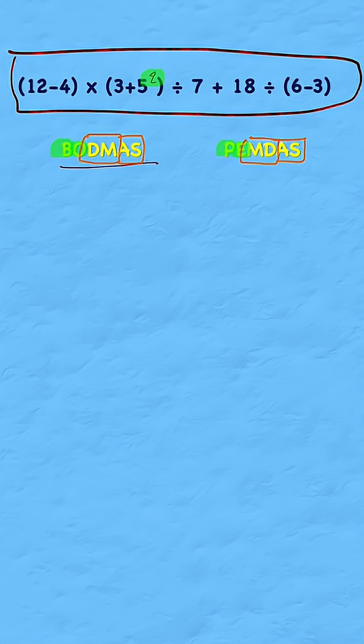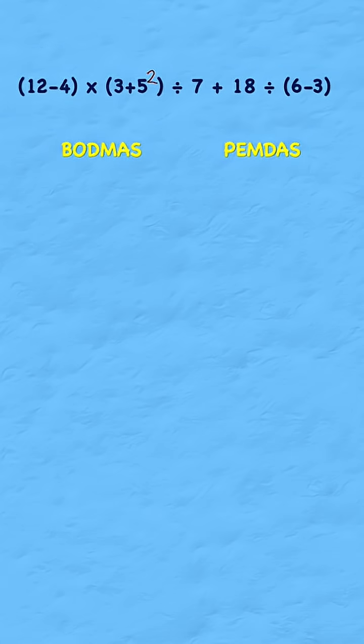We have to answer them in the order they appear in the question. So let's use that to answer this super simple question using these two methods. So we have to start with our brackets, or in other words, our parentheses. So we're going to solve what's in this bracket and this bracket and this bracket first of all.